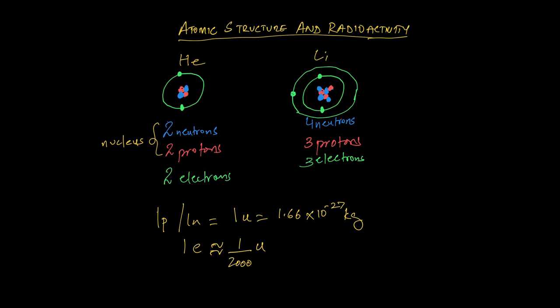The electron carries a charge of 1.6 × 10⁻¹⁹ coulombs, and it is referred to as minus one e to denote that it's a negative charge. The proton's charge is plus one e — numerically equal to 1.6 × 10⁻¹⁹ coulombs, just with a different sign. Neutrons carry zero charge.